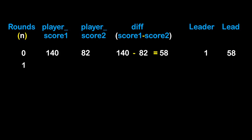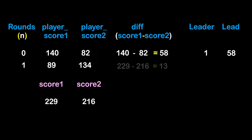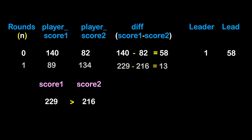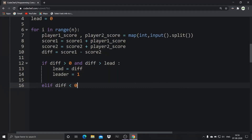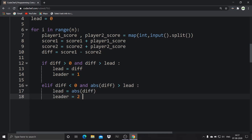When i becomes one, the second round begins. The scores of two players are taken by player_score_one and player_score_two. Those scores are added to score_one and score_two, and the difference is updated. If difference > 0, score_one is greater than score_two, so player one will be the leader. We compare this difference with the lead value updated in the last round. If difference > lead, then lead and leader get updated. If difference is negative, score_two is greater, meaning player two is the leader. If abs(difference) > lead, then lead = abs(difference) and leader = 2.